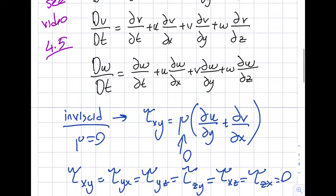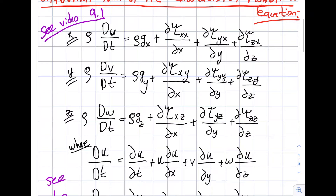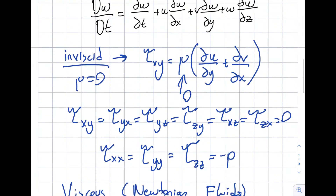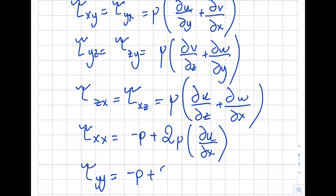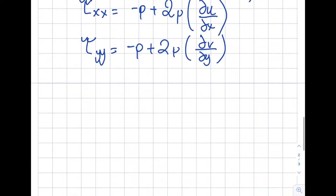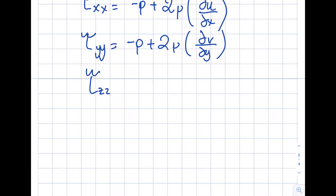The full stress tensor is a 3×3 matrix with nine components — that's what we call the stress tensor. Now for the primary (normal) stresses: τxx = −p + 2μ(∂u/∂x), τyy = −p + 2μ(∂v/∂y), and τzz = −p + 2μ(∂w/∂z).